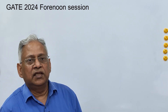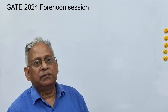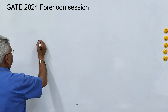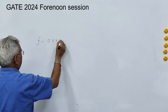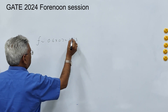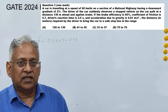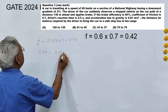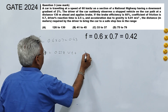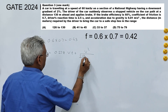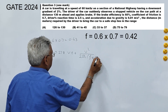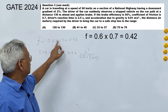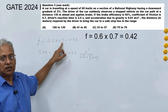Here we must understand the meaning of brake efficiency. Brake efficiency of 60 percent means the coefficient of friction will reduce by 60 percent. Therefore the effective value of f in this question will be 0.6 multiplied by 0.7, that is 0.43. The stopping sight distance formula is: SSD = 0.278 × V × T + V² / (254 × (f ± G)), where G is the gradient and f is the coefficient of friction.